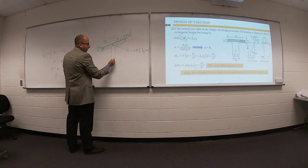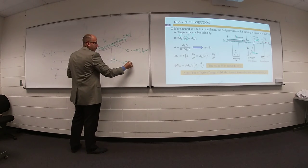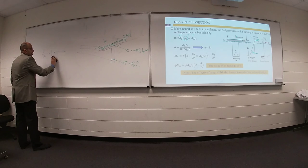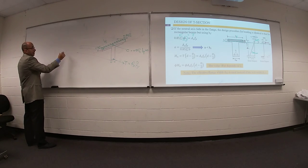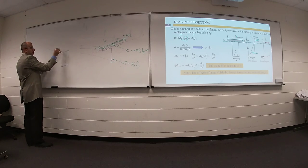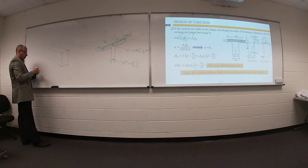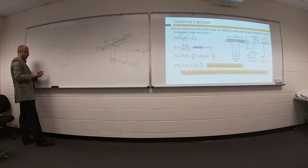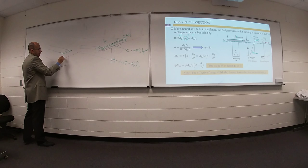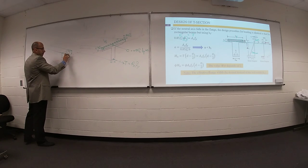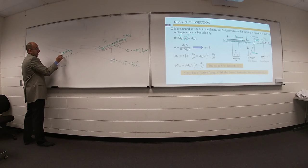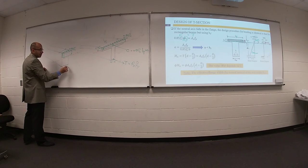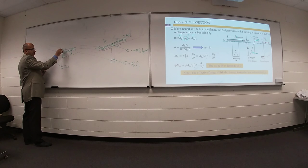We have steel reinforcement at this location, so we can expect tensile force equal to area steel times F yield. Just a quick comparison: if your cross section is a rectangular cross section, we have a neutral axis. At the top part we have a compressive stress block. This value is 0.85 F prime C, and this width is the same.